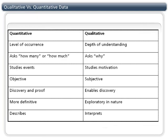This table juxtaposes quantitative and qualitative data. Quantitative studies events and asks how many or how much. Qualitative studies motivation and asks why. Quantitative is objective, more definitive, providing the proof. Qualitative is subjective, exploratory and interpretive.